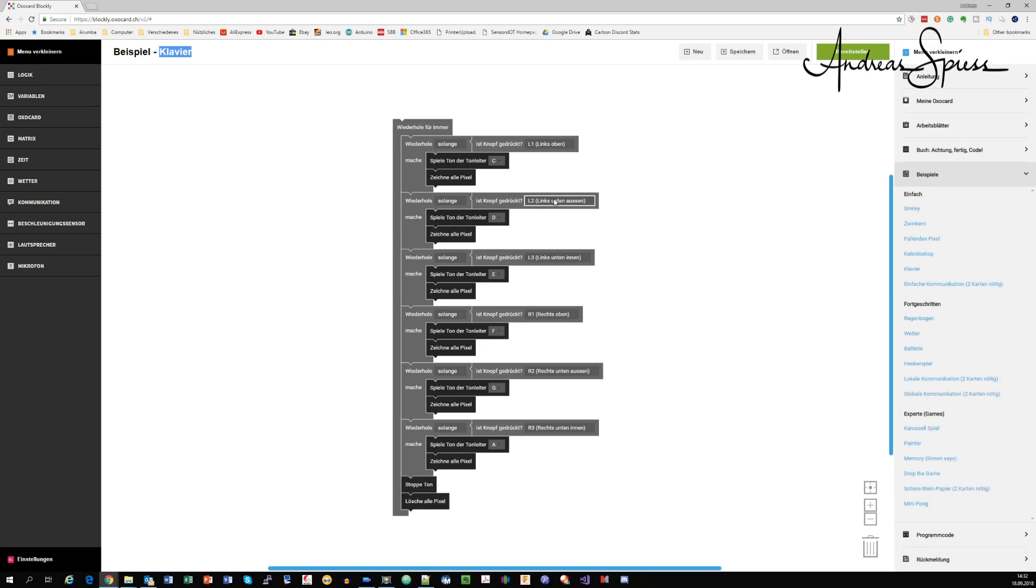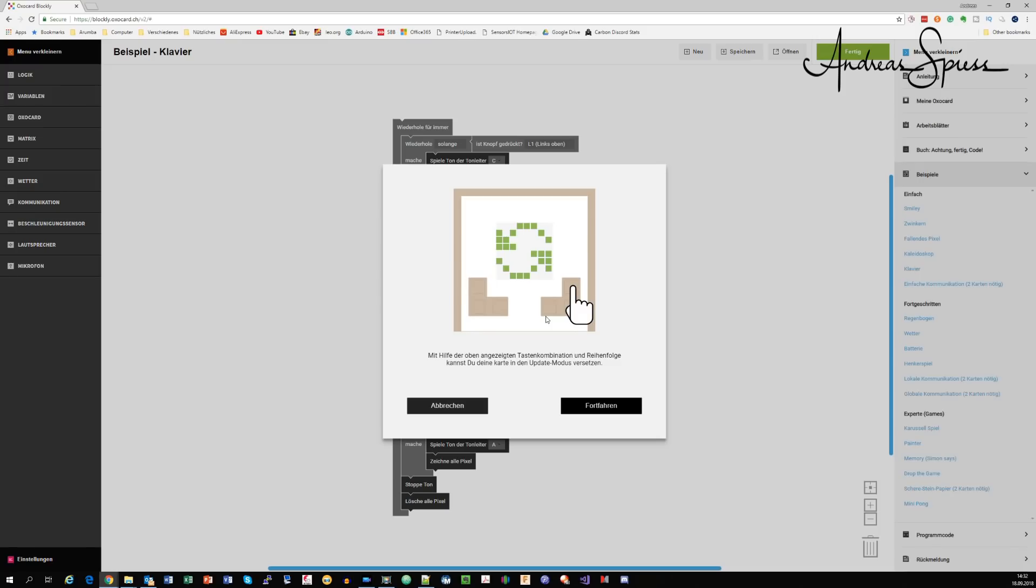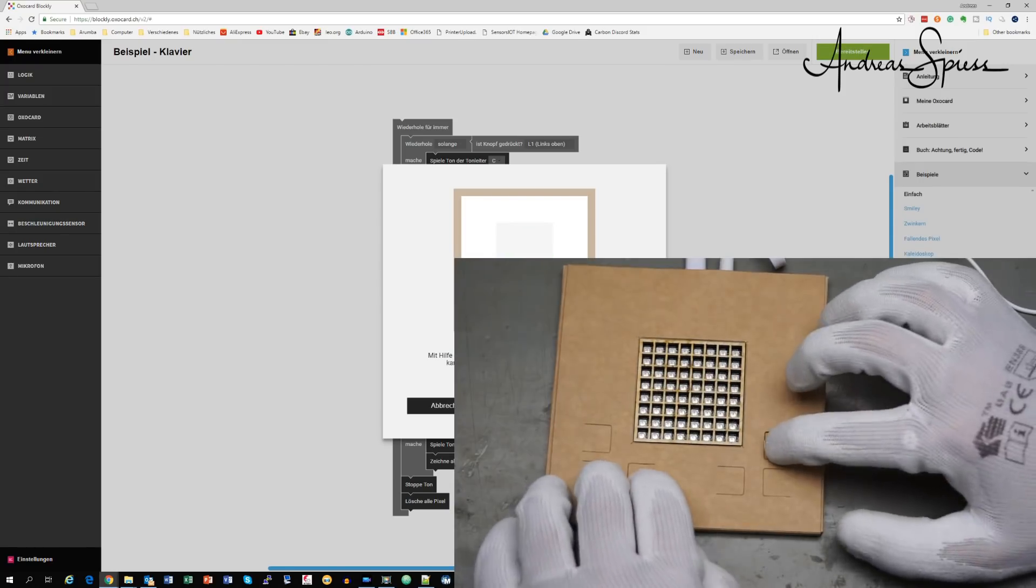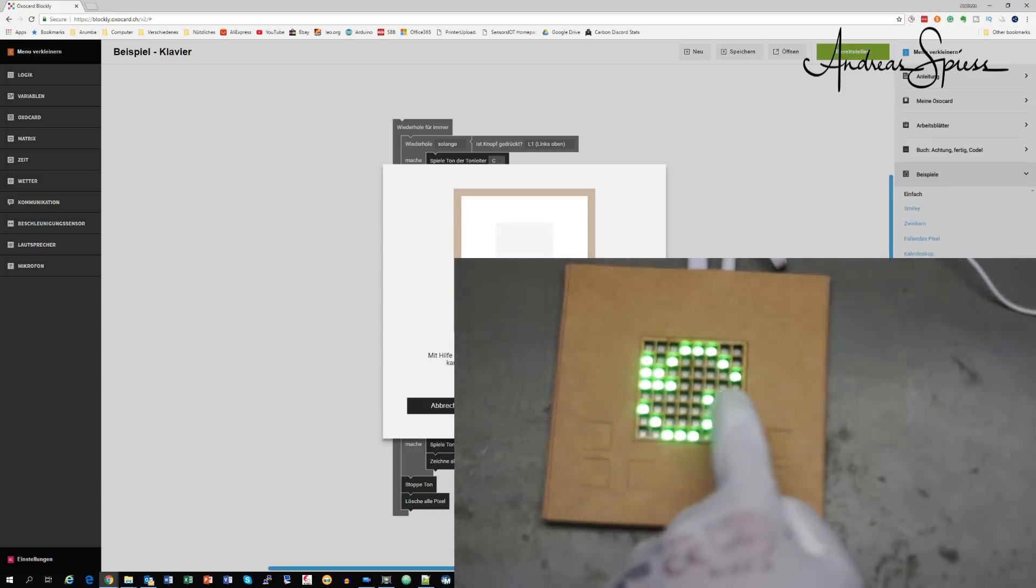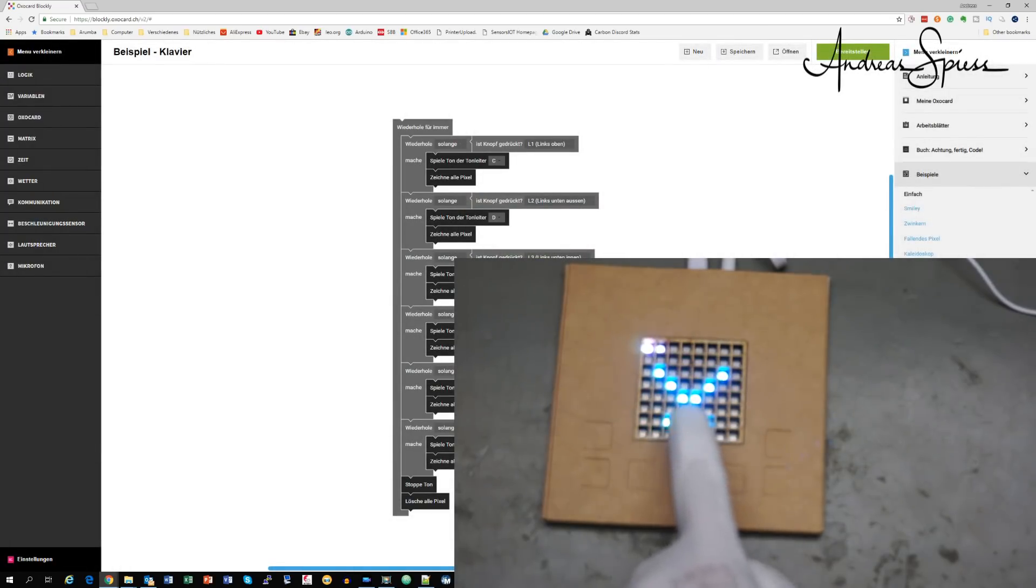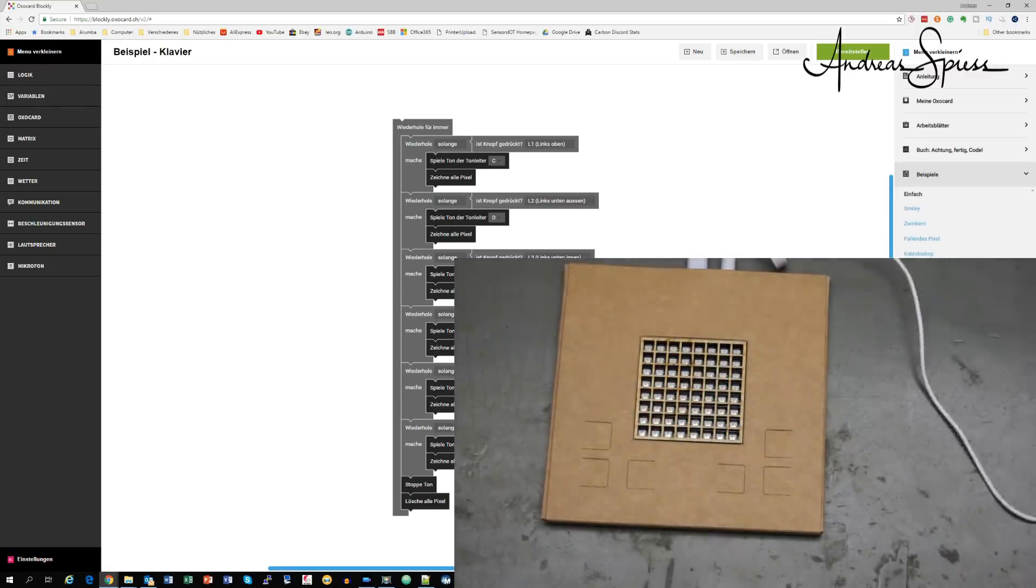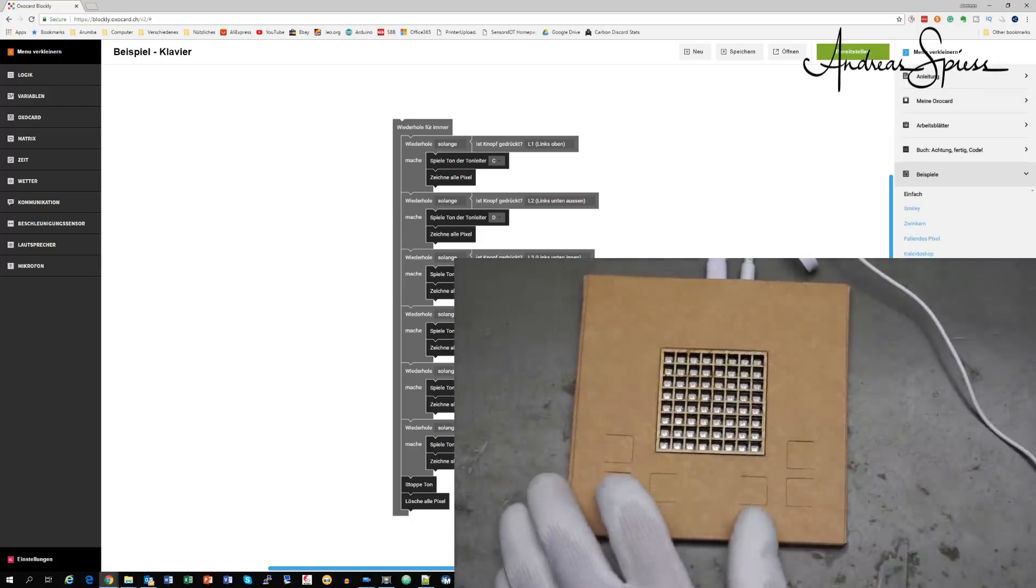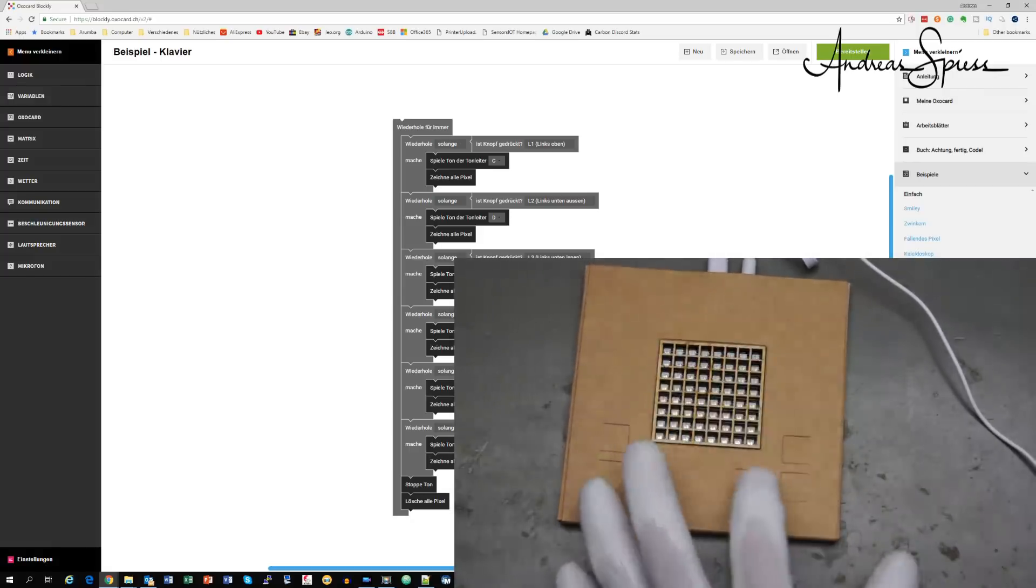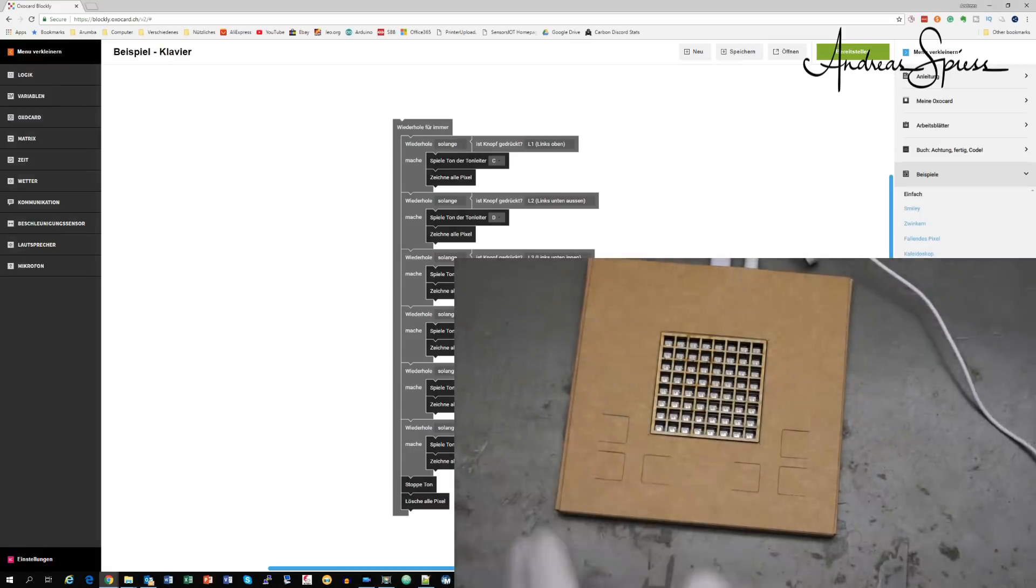Now we have to press the buttons on the OXO card. Now it waits for a upload. And now it uploads. And it's done. Now let's check. Seems to work.